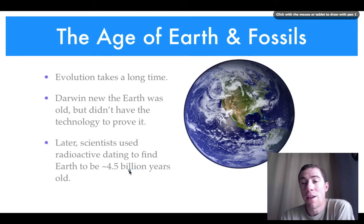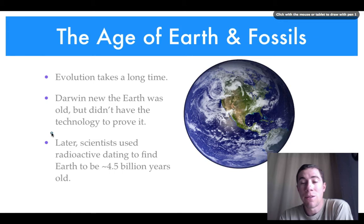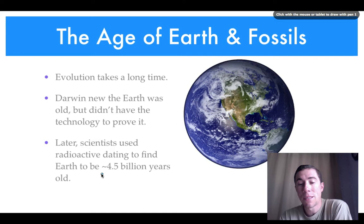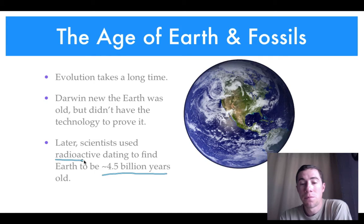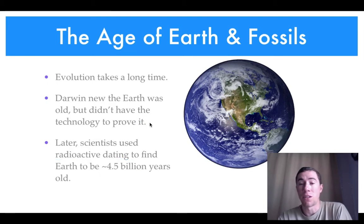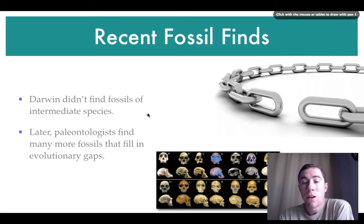Evolution takes a very long time. Darwin knew the earth was old, but at the time he didn't have the technology to prove it. Later scientists used radioactive dating to figure out approximately how old rocks are, and how old the fossils within those rocks are. What they found is that Earth is approximately 4.5 billion years old, which supports Darwin's hypothesis that the earth is extremely old — not just a couple thousand years old.